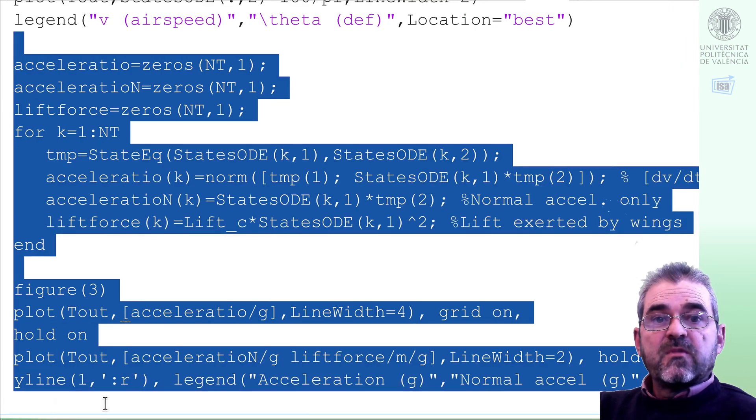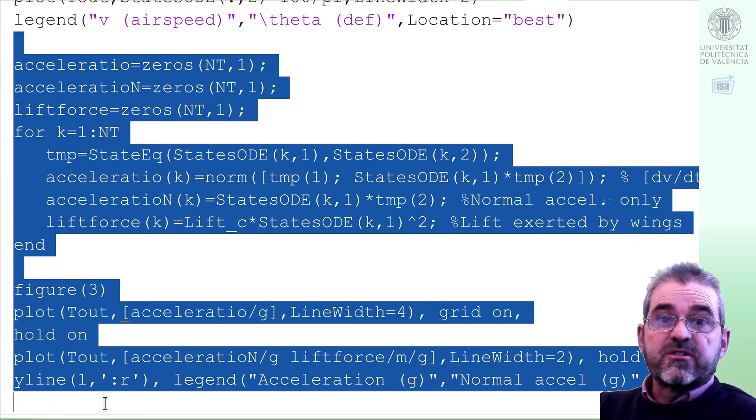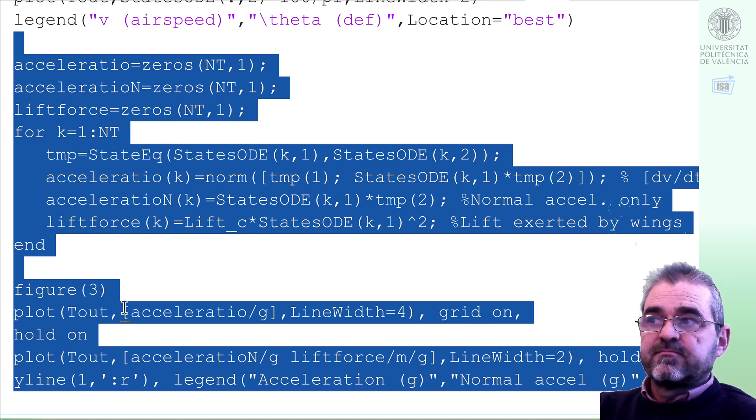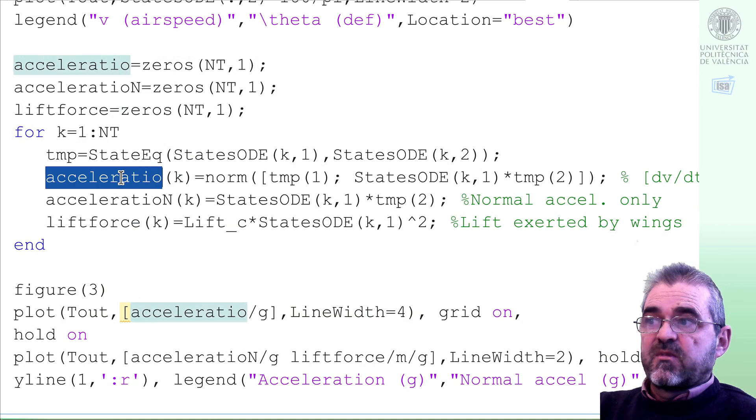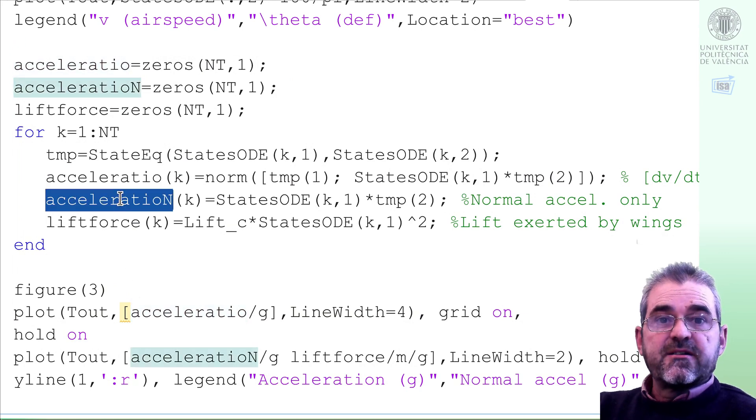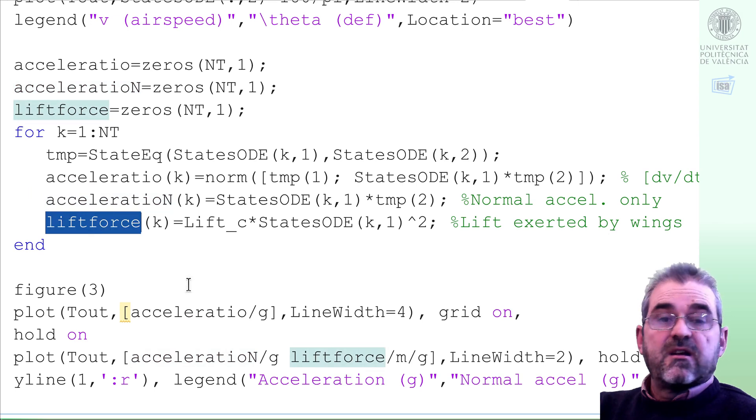The next fragment of code will plot the accelerations. Why? Well, because accelerations are proportional to forces. So if accelerations are big, maybe something breaks in the aircraft. So it's of interest to plot them. And in fact, we will plot the modulus of the acceleration vector, the normal acceleration, and the lift force.